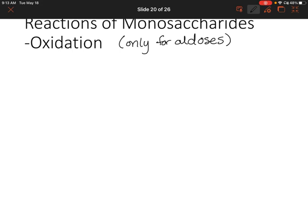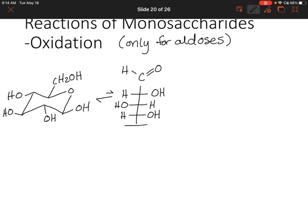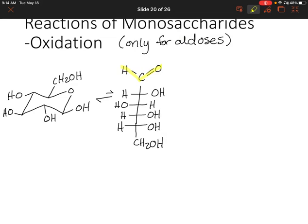Let's draw our sugar. Again, we typically find our sugar in the cyclic form at equilibrium, but there is still a small amount in the open chain form. Now we're going to turn our aldehyde into a carboxylic acid. Do you remember the reagents we would use to turn an aldehyde into a carboxylic acid?